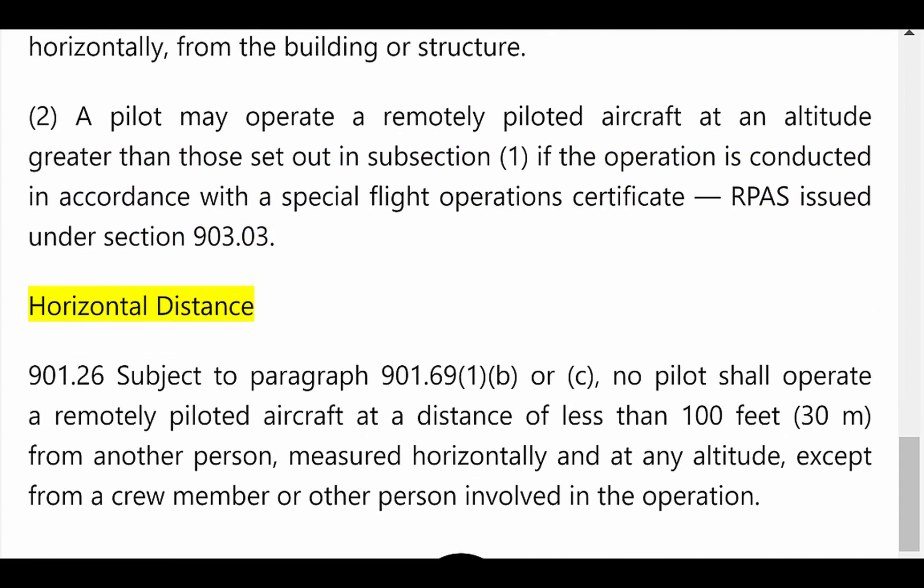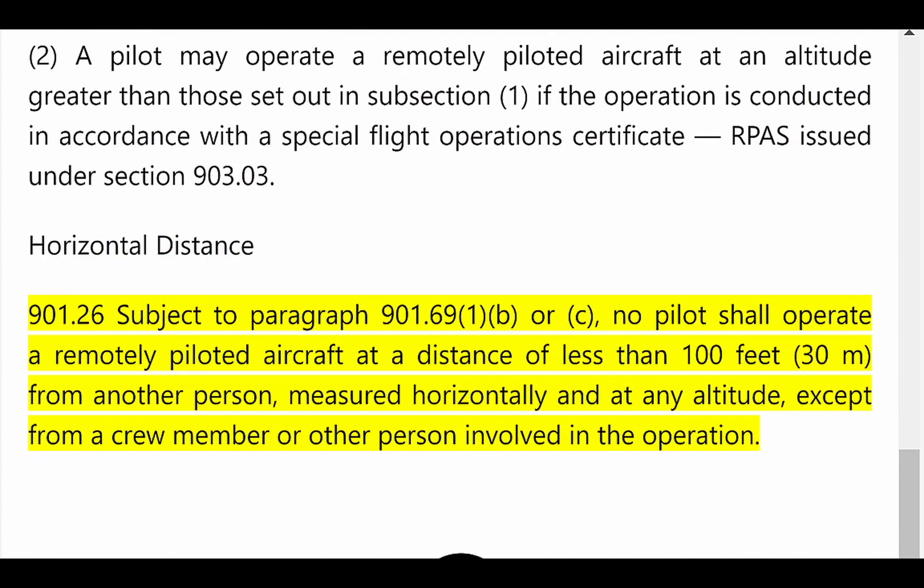Horizontal Distance. 901.26: Subject to paragraph 901.69(1)(b) or (c), no pilot shall operate a remotely piloted aircraft at a distance of less than 100 feet (30 meters) from another person, measured horizontally and at any altitude, except from a crew member or other person involved in the operation.